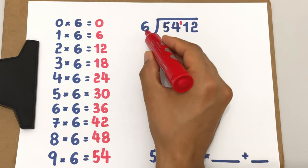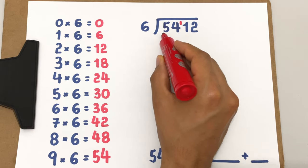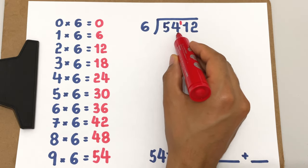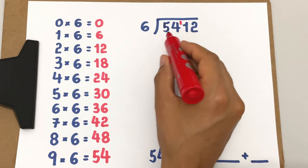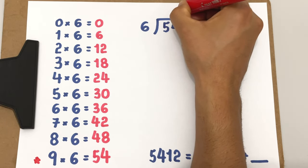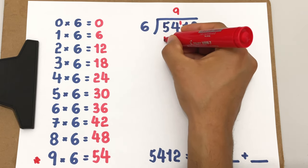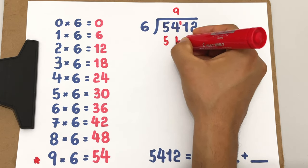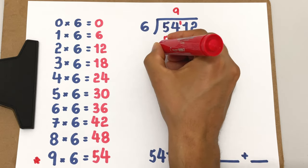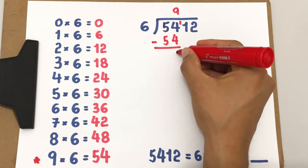What number do I multiply by 6 to get 54 or almost 54 but not more than 54? The number we are looking for is 9. We see here that 9 times 6 equals 54, so I write 9 here. Since 9 times 6 equals 54, that's what I write here, and then we do an easy subtraction because 54 minus 54 equals 0.